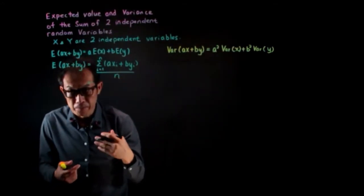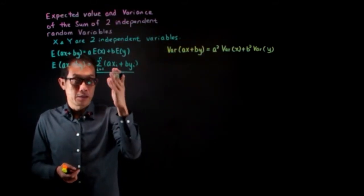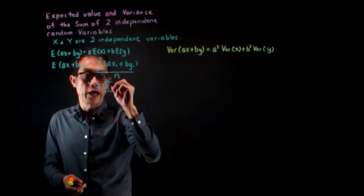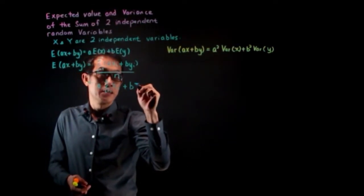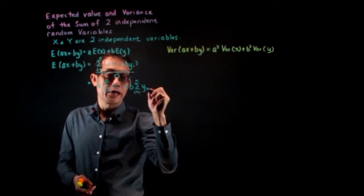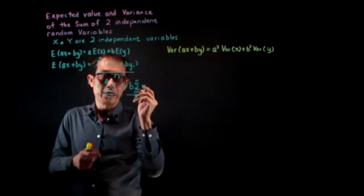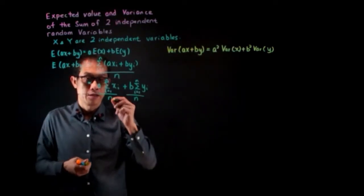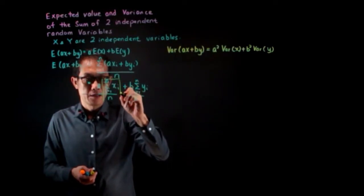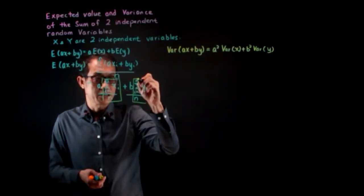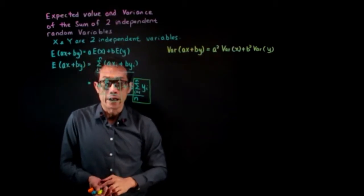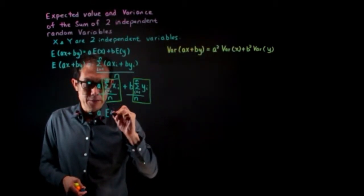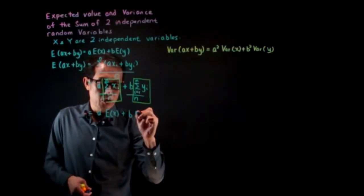Using your knowledge of summation, you can expand this out. This will be equals to a into the summation of i equals 1 to n of X_i, plus b times the summation from i equals 1 to n of Y_i, all over n. You can break this into two partial fractions. This term here is the average of X, whereas this is the average of Y. So we can rewrite it as a times expected value of X plus b times expected value of Y.